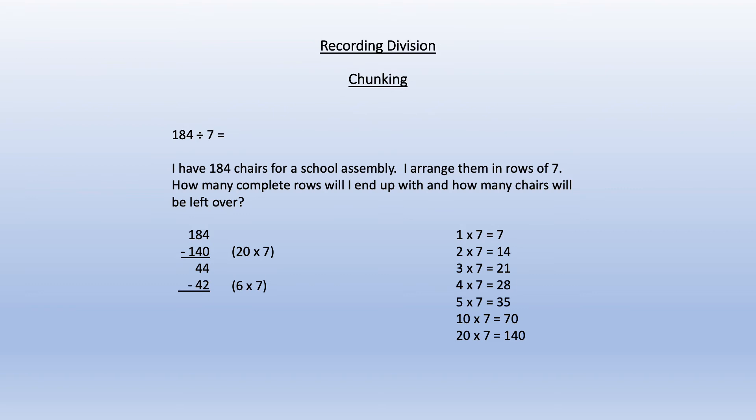Then subtract 42 because from our 7 times table we know 7 times 6 equals 42 so we can take that away from 44 to leave 2. Altogether that is 26 sevens with a remainder 2 which we can then put back into the number sentence.